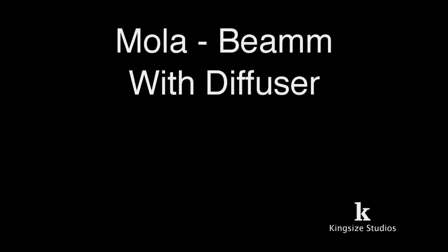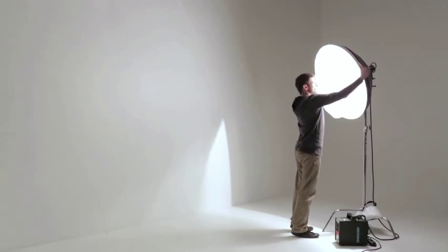All of the Molar dishes come with a diffuser, which can be fitted to create a softer, more flattering light.